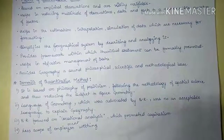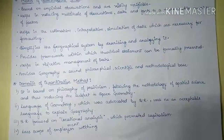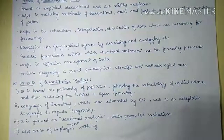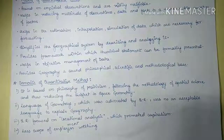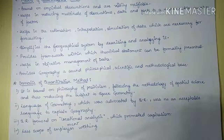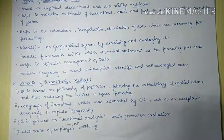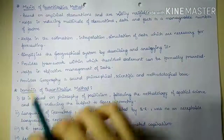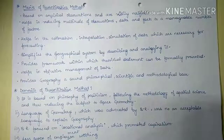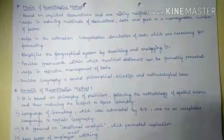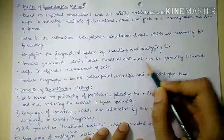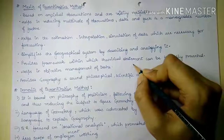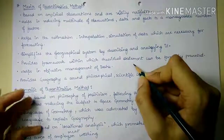For example, in the locational theory of industries, the land use intensity and the stage of development of landforms can be easily explained and predicted by the help of quantitative techniques. We will study these locational theories in further lectures of economic geography. Additionally, quantitative method provides a framework within which theoretical statements can be formally presented.